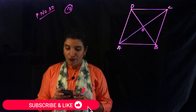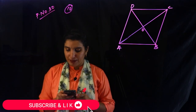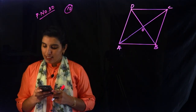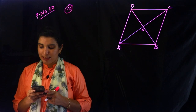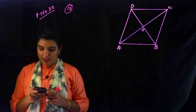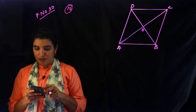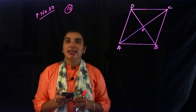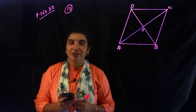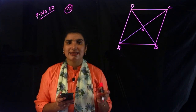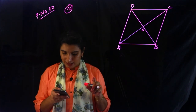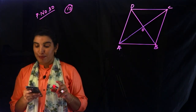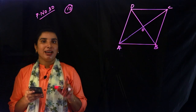The question is: Prove that if all sides of a parallelogram are equal, then each diagonal is the perpendicular bisector of the other.